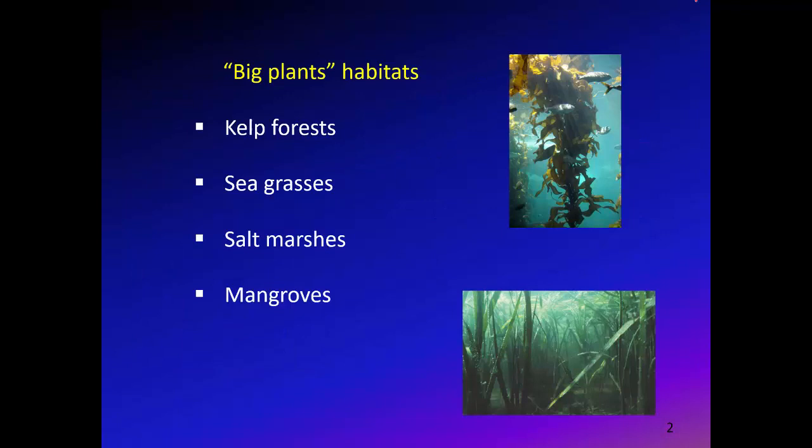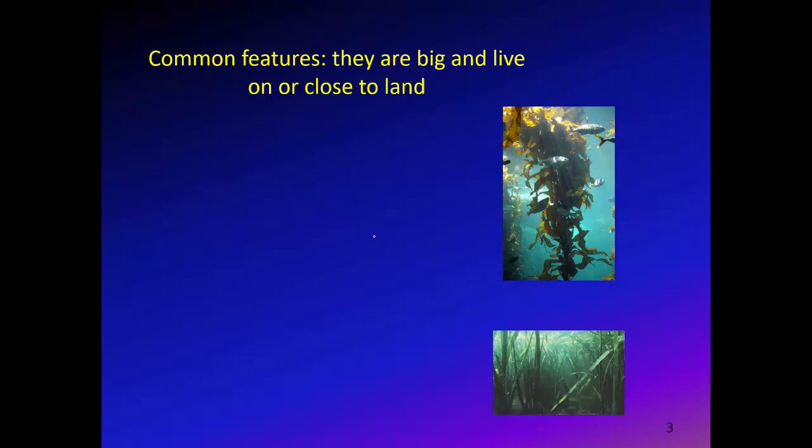Today we're talking about habitats dominated by much larger organisms — I've called these 'big plant habitats.' They're big in comparison to phytoplankton and bacteria, and especially when you talk about kelp forests. We're also going to cover seagrasses, salt marshes, and mangroves. What they have in common, besides being big, is that they live on or close to land, because they depend on light.